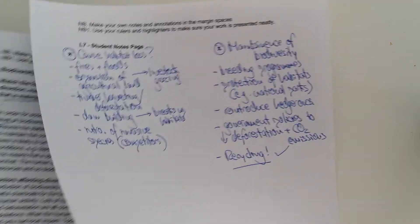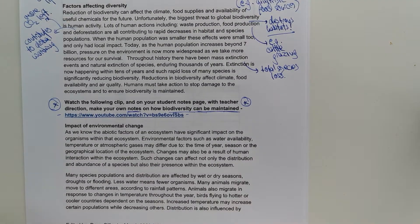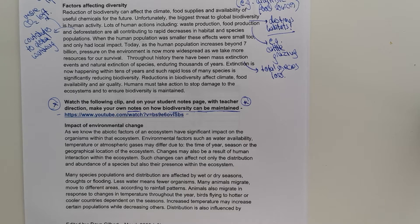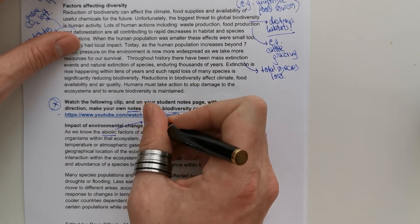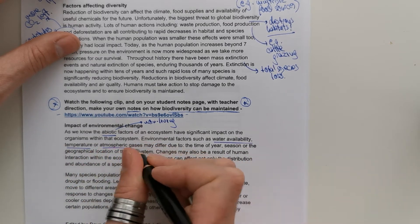If you turn back to where we left off, we just need to think a little bit more about the impact of environmental change. So, let's go through the paragraph. As we know, the abiotic factors of an ecosystem have significant impact on the organisms within the ecosystem. Environmental factors such as water availability, temperature or atmospheric gases may differ due to the time of year, season of the geographical location of the ecosystem. Changes may also result of human interaction with the ecosystem. Such changes can affect not only the distribution and abundance of species, but also their presence within the ecosystem. So, abiotic factors. We know are non-living. So, non-living factors such as water availability and temperature and also atmospheric gases.